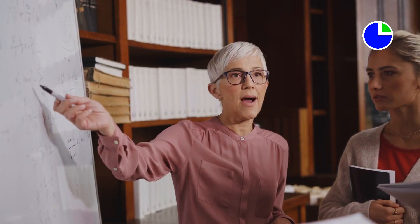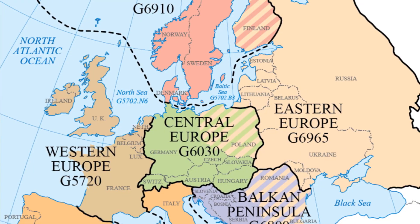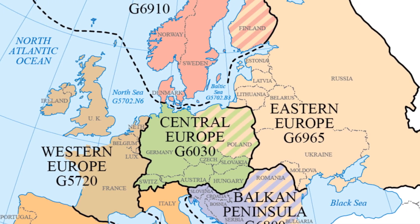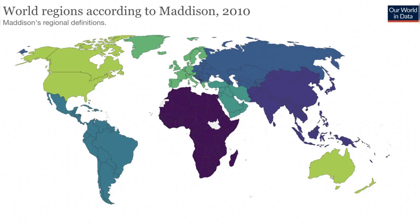Since many textbooks are written by Western academia, the differences between European countries seem to be exaggerated, while the differences between other parts of the world are often oversimplified and underappreciated.